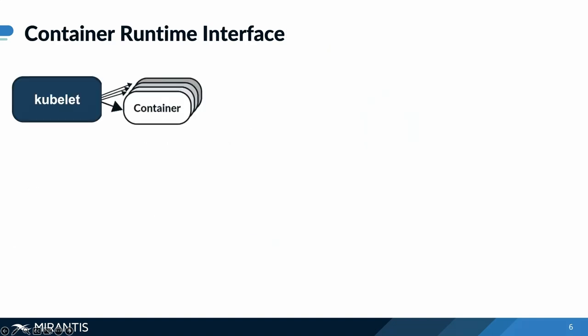Zooming in a little bit more into the picture — in version 1 of Kubernetes originally, the Docker engine was integrated directly into the Kubelet code, so the Kubelet would interface with the containers via the Docker engine. To provide the capability to interact with a wider range of container runtimes and not just the Docker-supported ones, the container runtime interface was introduced.